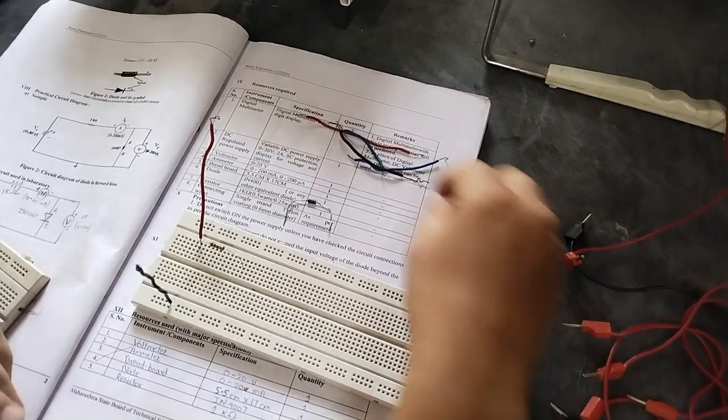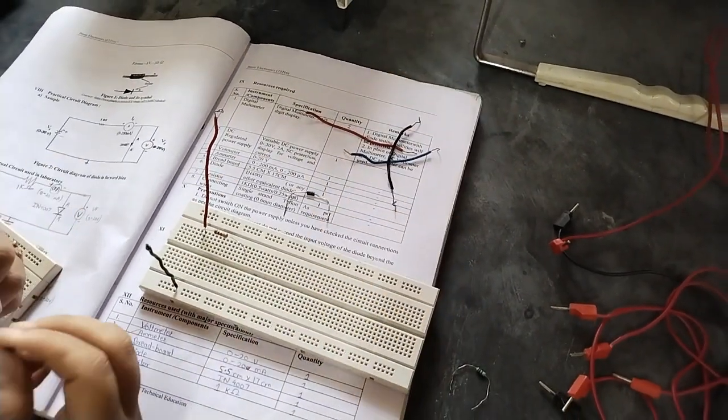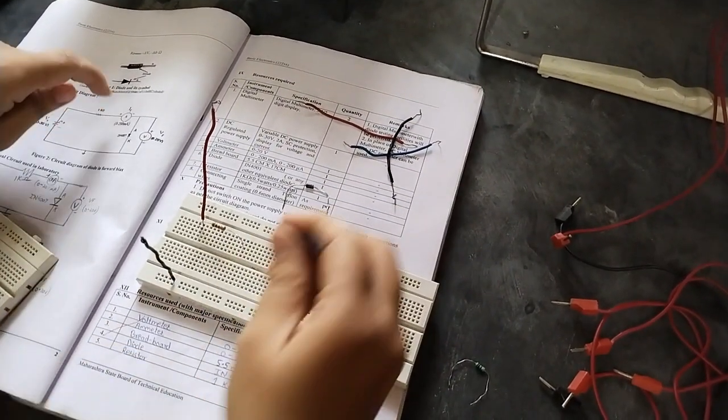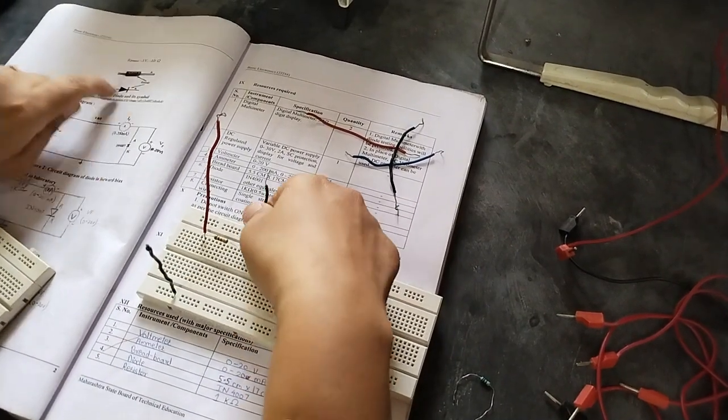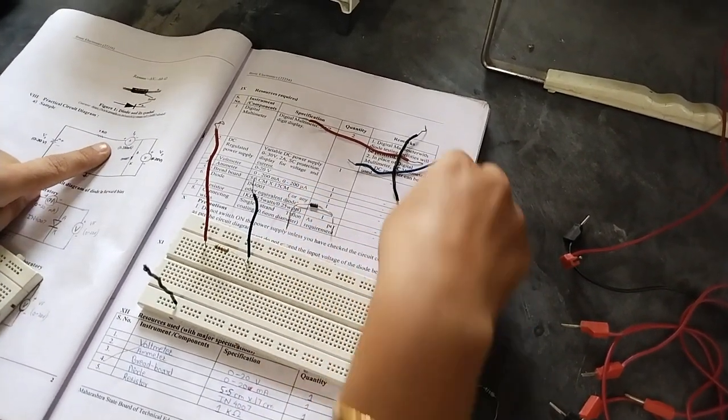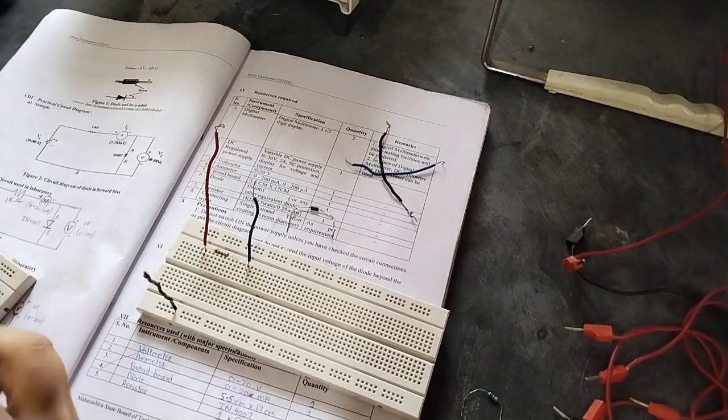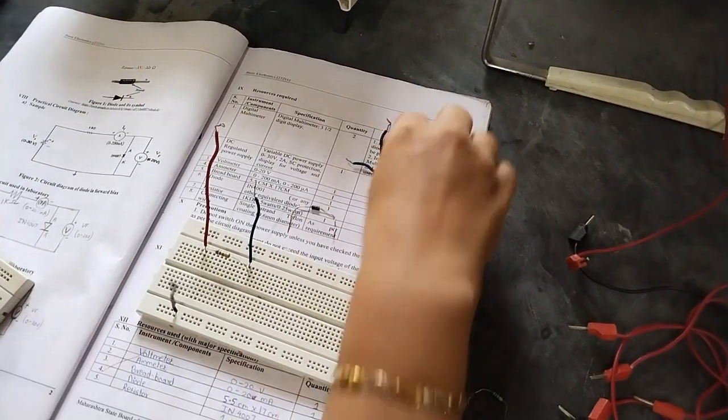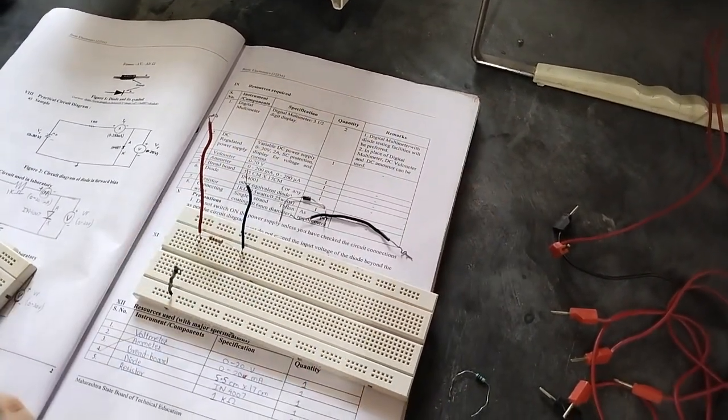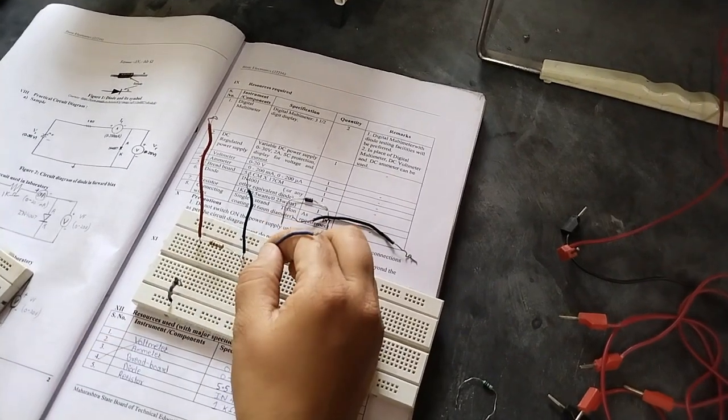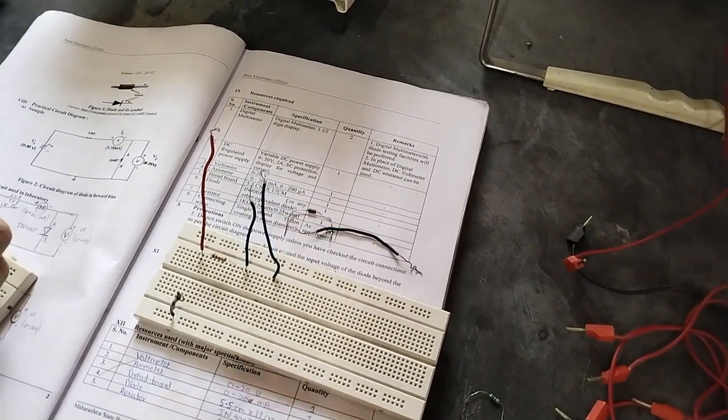Next, we will have two terminals for our ammeter. So positive will be connected to the resistor. As shown here, and negative will be connected to the diode.